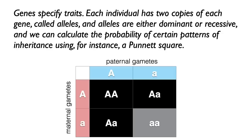And I'm sorry to say I'm going to disillusion you today. Here's a common idea that many people have: genes specify traits. Each individual has two copies of each gene called alleles, and alleles are either dominant or recessive. We can calculate the probability of certain patterns of inheritance using a Punnett square. This may sound totally familiar to you — this is stuff you might have learned in high school science class. If you don't know this stuff, don't feel bad. That means you're just starting from an empty slate, and we can get you right from the beginning.